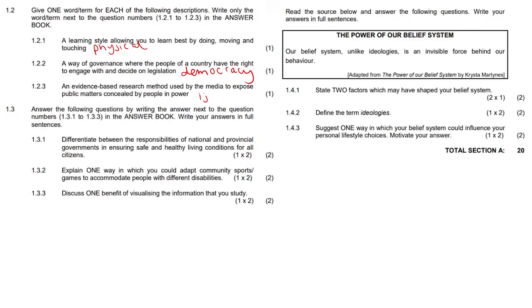Differentiate between the responsibilities of national and provincial governments in ensuring safe and healthy living conditions for all citizens. The national government creates, amends, implements, and improves laws that promote safe and healthy living for the whole country. The provincial government carries out these implementations — it's more about enforcing these laws and carrying out the functions.